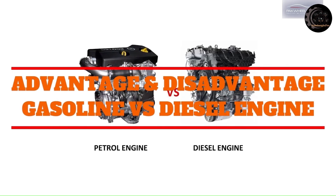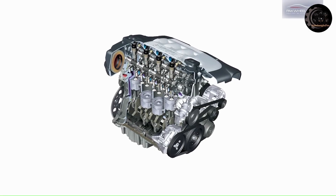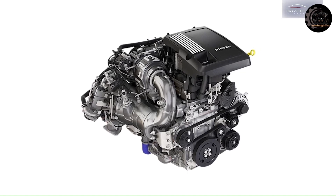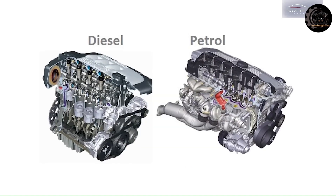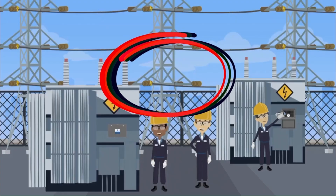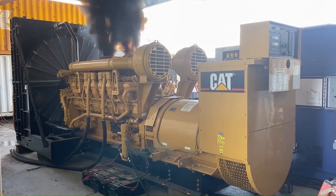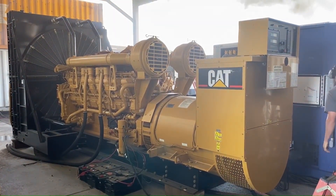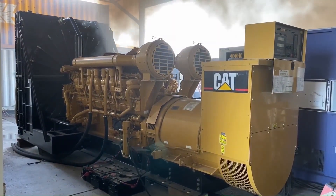Advantages and disadvantages of four-stroke diesel versus petrol engines: Diesel engines tend to be more expensive to manufacture and purchase compared to petrol engines. Diesel engines are generally noisier and produce more vibration compared to petrol engines, which may be perceived as less refined or comfortable, especially in passenger cars. This has also led to stricter emissions regulations in many countries.